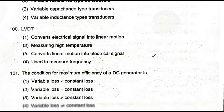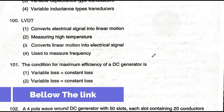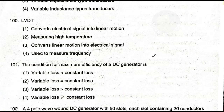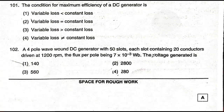Question number 101: The condition for maximum efficiency of a DC generator is — option one: variable losses less than constant losses; option two: variable losses equal to constant losses; option three: variable losses greater than constant losses; option four: variable losses not equal to constant losses. The answer is option two — variable losses equal to constant losses.